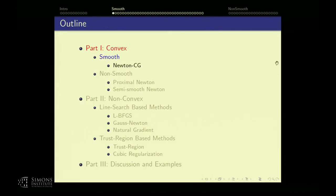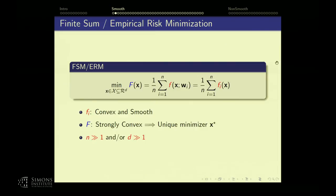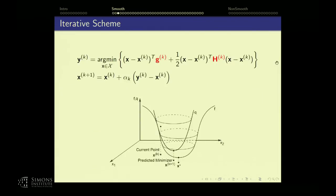Let's look at Newton-CG and focus on the empirical risk minimization or finite sum problem. We have a sum of functions where every summand is convex and smooth, n is large, and the overall objective function is strongly convex — which implies a unique minimum. Both n and d are large.